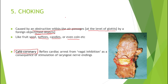To summarize: choking with incomplete obstruction leads to coughing as the body's response. But in complete obstruction — cafe coronary — there is no speech or coughing. Stimulation of the laryngeal nerves stimulates the vagus nerve, and vagal inhibition leads to reflex cardiac arrest. The person dies silently and suddenly, and the cause of death is not easily established until a detailed autopsy is performed. This is a high-yield concept that has appeared more than once in past paper MCQs.